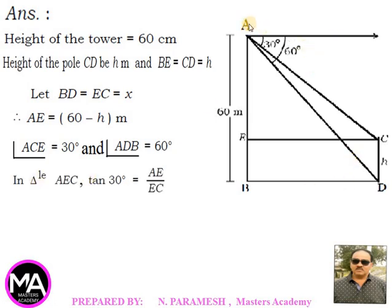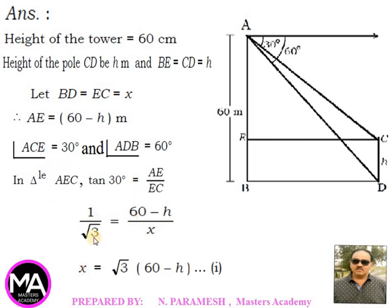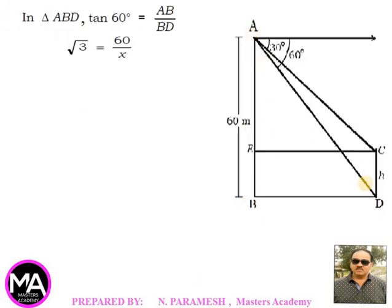In triangle AEC: tan 30° = AE/EC, so 1/√3 = (60-h)/x, giving x = √3(60-h) — equation 1. In triangle ABD: tan 60° = AB/BD, so √3 = 60/x, giving x = 60/√3 — equation 2.